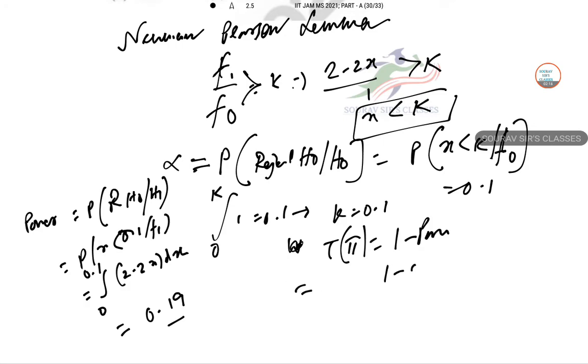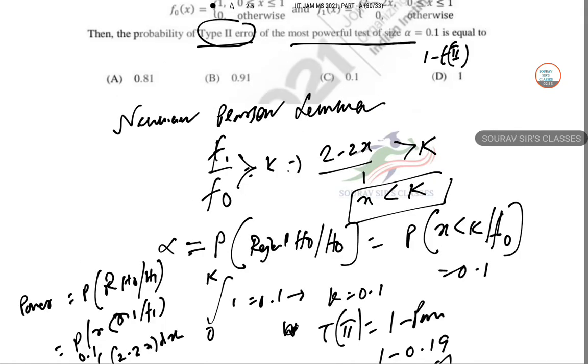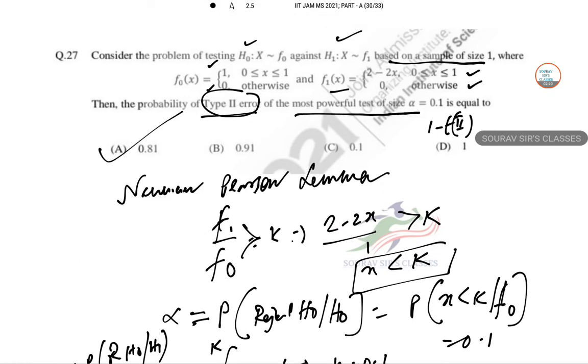So 1 minus 0.19, probability of type 2 error is 0.81. So option number A is correct.